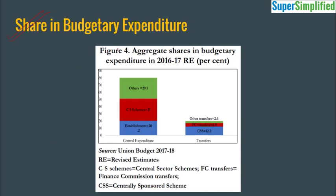This figure shows the share in budgetary expenditure. Of the 80% central expenditure: 20% was on establishment (salaries and wages), 31% on central sector schemes, and 29.1% on other expenditures. Of the 20% transfers: 12% is central sector schemes, 4.9% is Finance Commission transfers, and 2.6% is other transfers. The key figure to remember: 80% is central government expenditure and 20% is transfers.